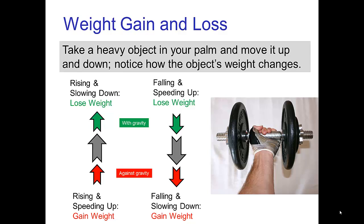Going against gravity would be if you're lifting it and speeding up. On the other hand, if you're lifting it but then slowing down, then you're going with gravity. For example, if you throw a ball up into the air, when the ball is going with gravity, it's rising and slowing down. When falling, it naturally speeds up. So going with gravity means lowering the object and speeding up. But if you bring it to a stop as you're coming down, you're going against gravity, and at that point the object should feel heavy in your hand.